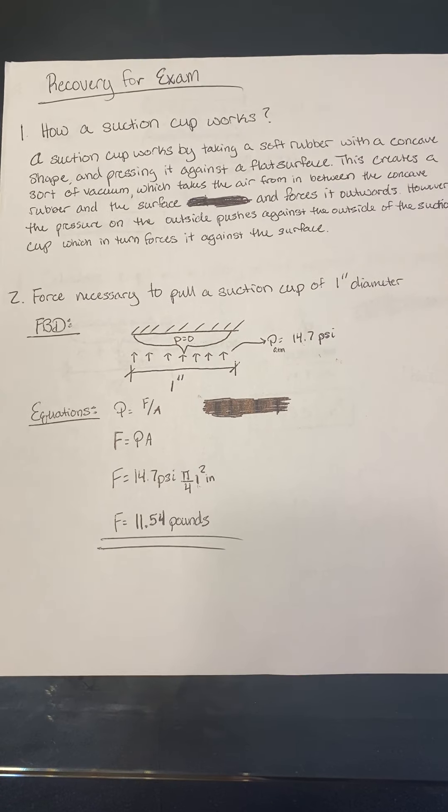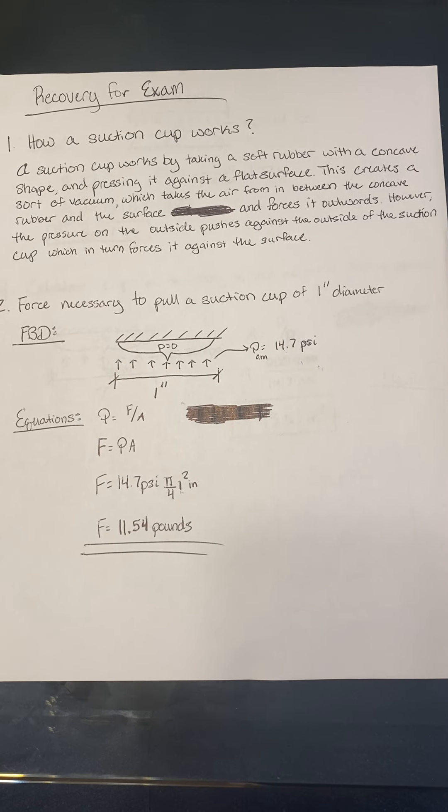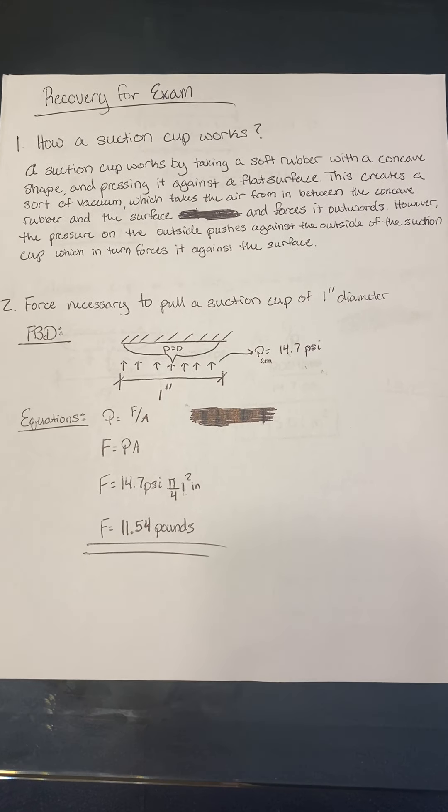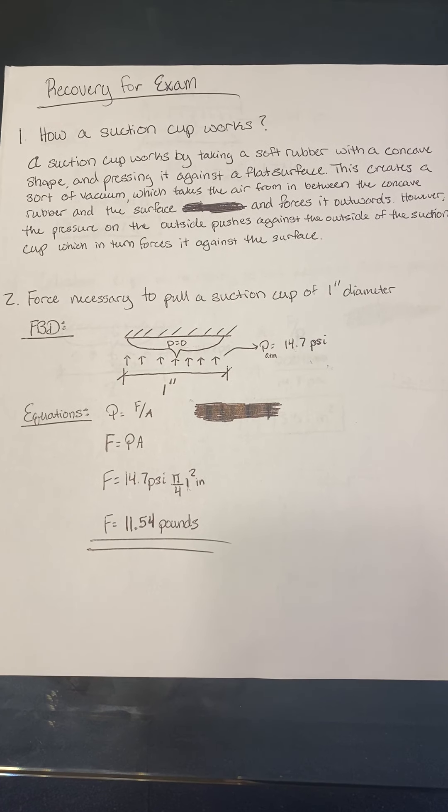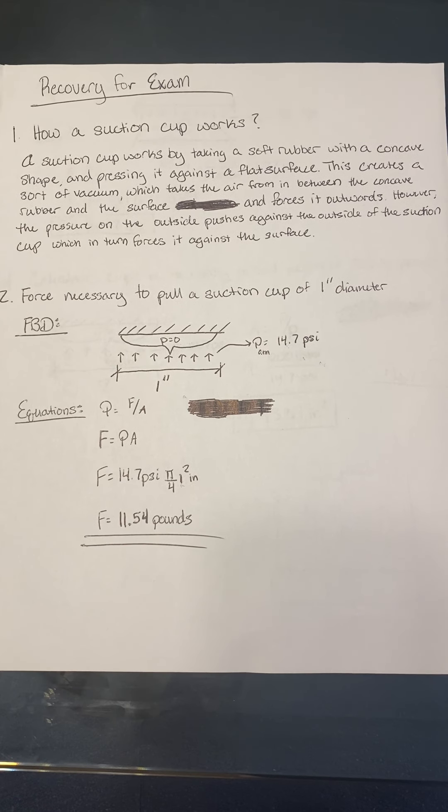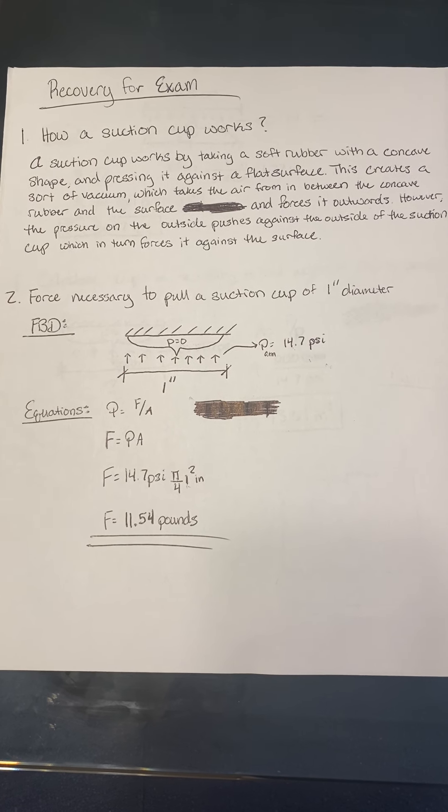As you can see here, a suction cup works by taking a soft rubber with a concave shape and pressing it against the surface. This creates a sort of vacuum which takes the air from between the concave rubber and the surface and forces it outwards. However, the pressure on the outside pushes against the outside of the suction cup.